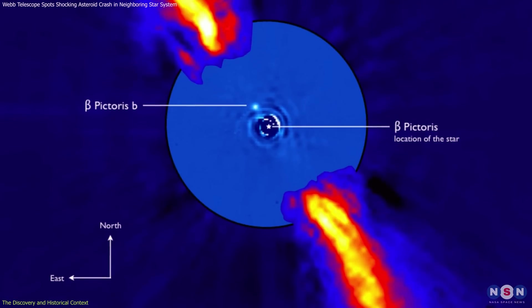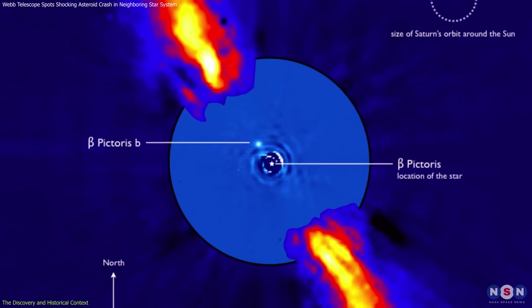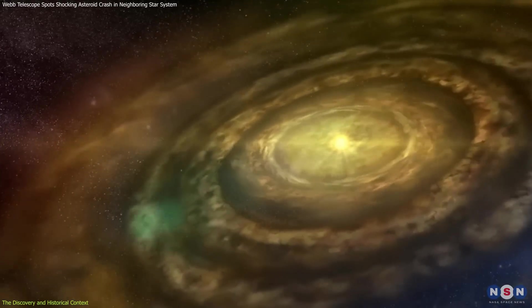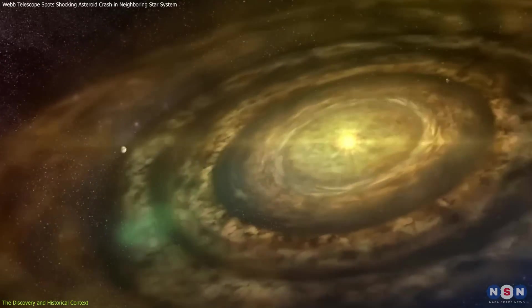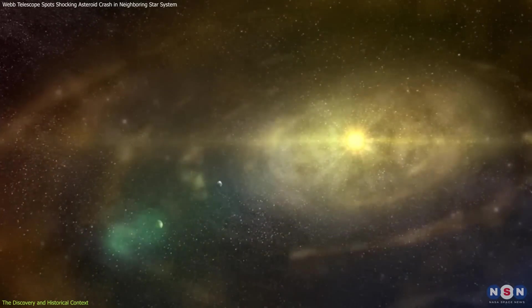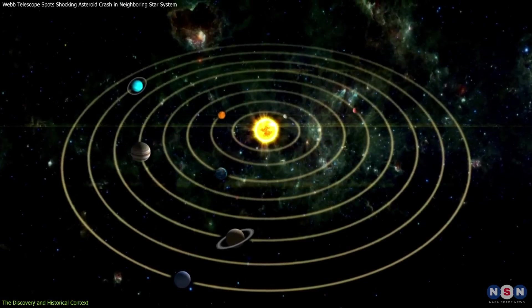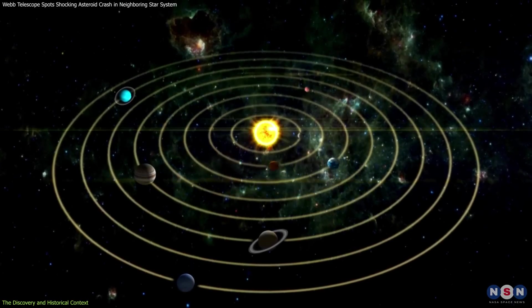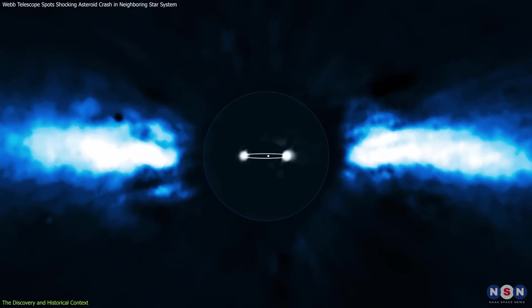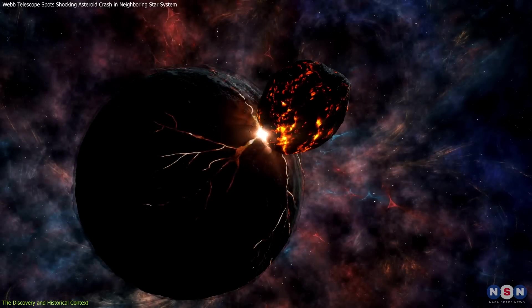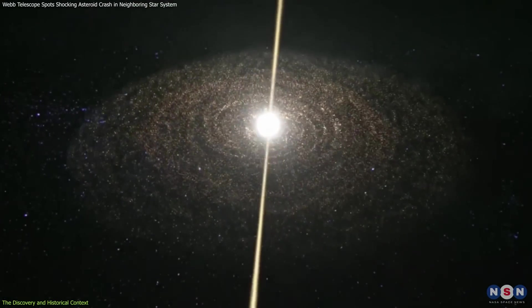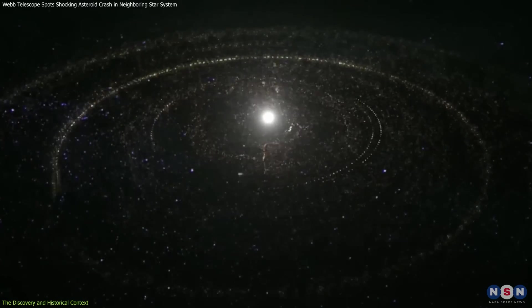The Beta Pictoris system has long been a focal point for astronomers due to its relative youth and active planet-forming processes. At only 20 million years old, compared to our 4.5-billion-year-old solar system, this system is in a tumultuous stage of development. Observing such a dramatic collision in this system provides a unique window into the early stages of planetary formation.